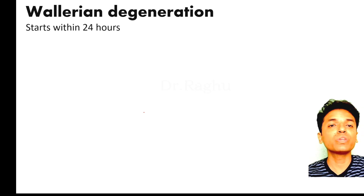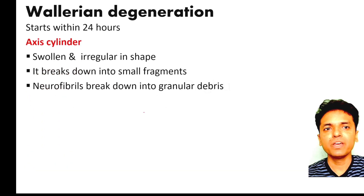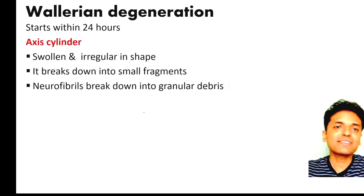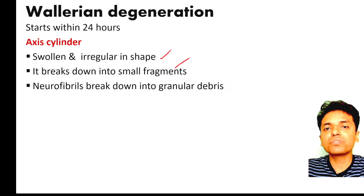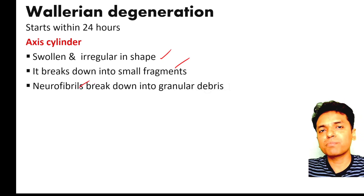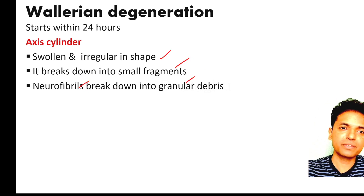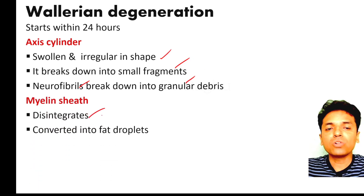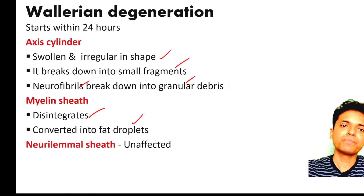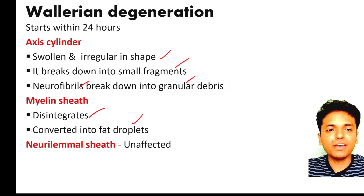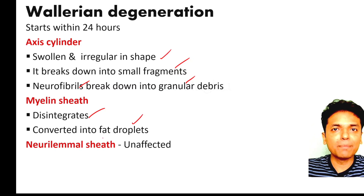Three important changes occur in the axis cylinder during Wallerian degeneration. The axis cylinder swells and becomes irregular in shape. It then breaks down into smaller fragments, and the neurofibrils within the axis cylinder are also broken down into granular debris. Subsequently, the myelin sheath disintegrates and is converted into fat droplets. The Schwann cell and its membrane, the neurilemmal sheath, remain unaffected.